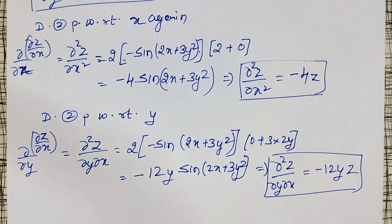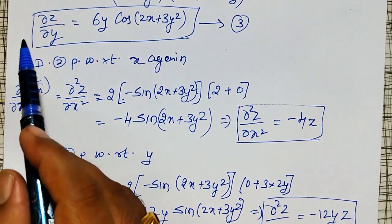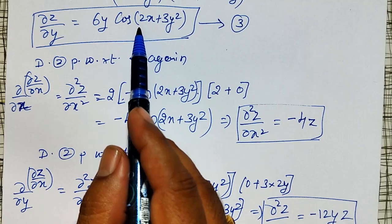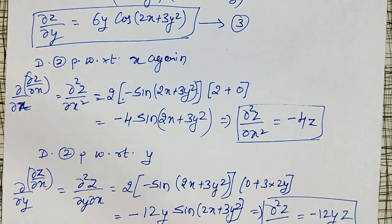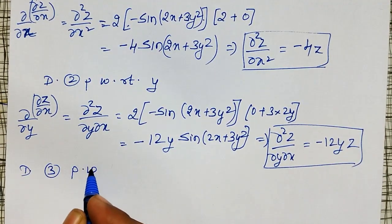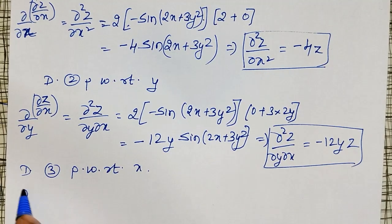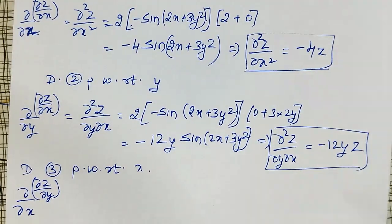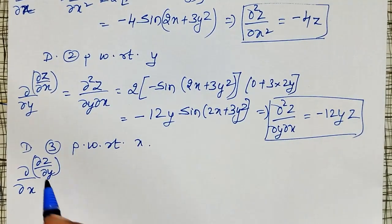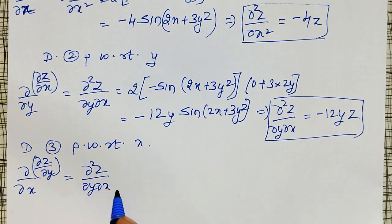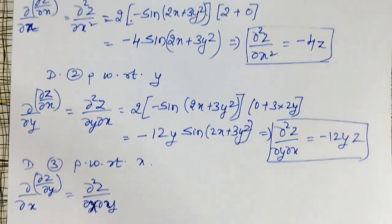Equation number three, ∂z/∂y, can again be differentiated partially with respect to x as well as with respect to y to get second order derivatives. Differentiating equation three partially with respect to x first — the notation is ∂/∂x(∂z/∂y), written as ∂²z/∂x∂y.